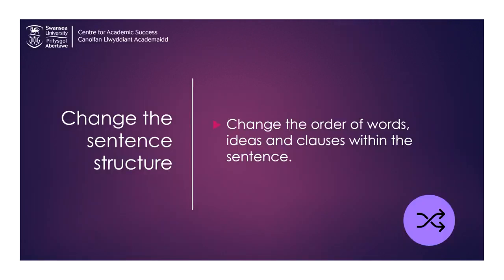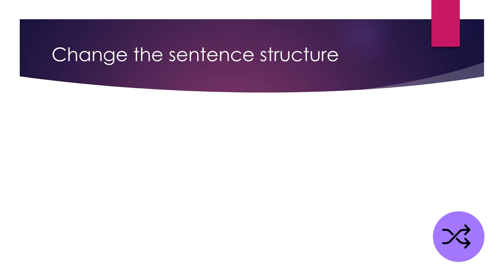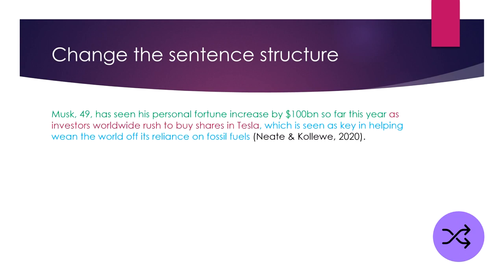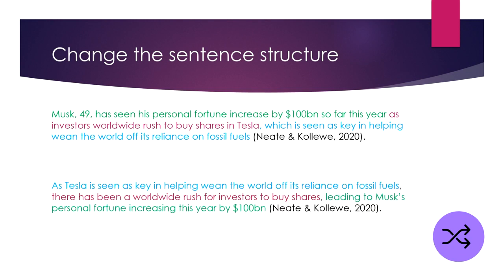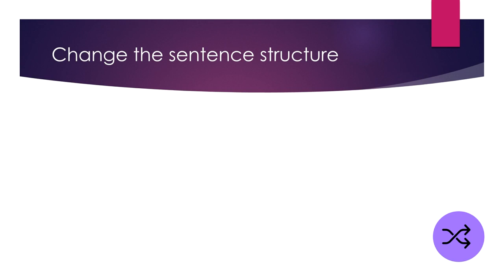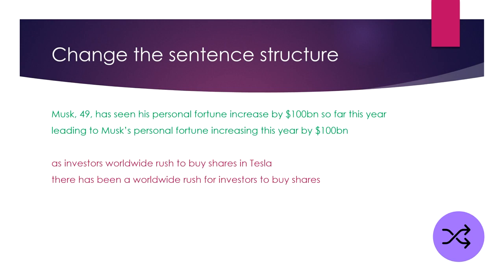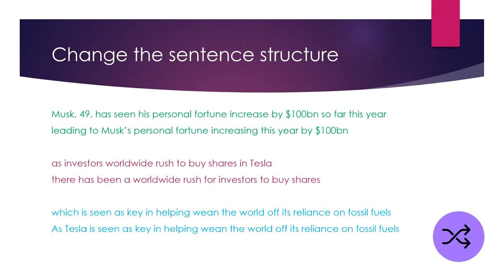When you change the sentence structure, you can change the order of the words and ideas and the clauses within the sentence. Looking at our example, here's our original sentence. Each clause has been given a separate colour. Here is the sentence after rearranging the structure. Looking even more closely, you can see how it's possible to change the word order within the clause.